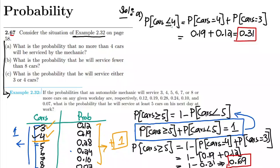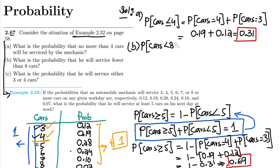Similarly, for part B: what is the probability that the mechanic will service fewer than 8 cars? I have to find the probability that the number of cars serviced is fewer than 8.